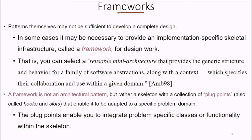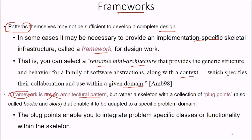When it comes to frameworks, patterns themselves may not be sufficient to develop a complete design. In certain cases, it may be necessary to provide an implementation-specific skeleton infrastructure — a framework for design work. We can select a reusable mini-architecture that provides the generic structure and behavior for a family of software abstractions, along with the context which specifies their collaboration and use within a given domain. A framework is not an architectural pattern — it is a skeleton with a collection of plug points, also called hooks and slots, that enable it to be adapted to a specific problem domain. The plug points enable us to integrate problem-specific classes or functionality within this skeleton.